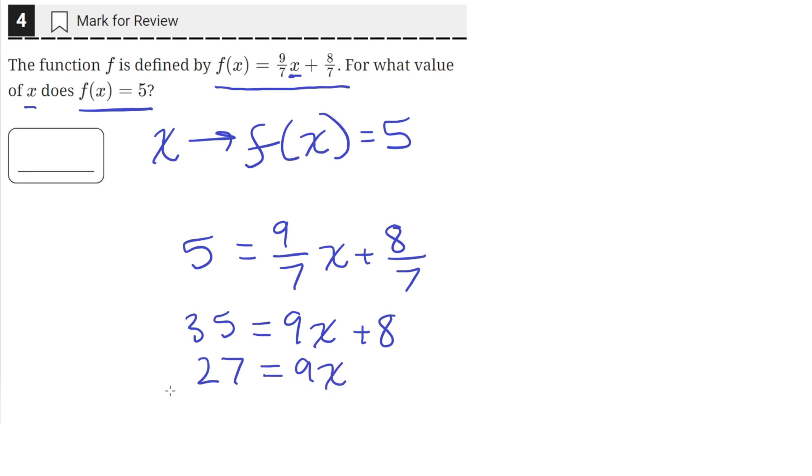Then we can divide both sides of the equation by 9 so that we get x alone. 27 divided by 9 is just 3, so we get that x equals 3. So for a value of 3 for x, f(x) equals 5.